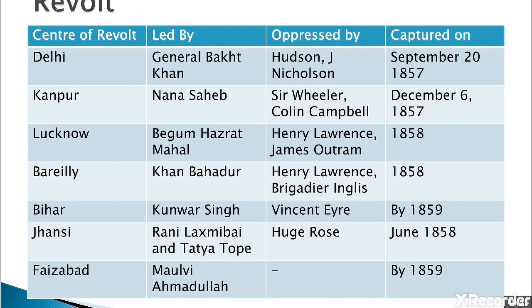In Jhansi, Rani Lakshmi Bai assumed leadership of the sepoys. Lord Dalhousie, the Governor-General, had refused to allow her adopted son to succeed the throne after her husband Raja Gangadhar Rao died, and had annexed the state by application of the Doctrine of Lapse. Driven out of Jhansi by British forces, she joined forces with Tatya Tope, a close associate of Nana Sahib after the loss of Kanpur. At Faizabad, Maulvi Ahmadullah was an outstanding leader of the revolt — a native of Madras who had moved to Faizabad in the north, where he fought a stiff battle against British troops and emerged as one of the revolt's most acknowledged leaders.